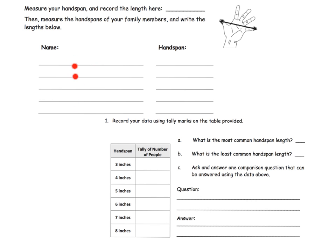So heads up from an equity point of view on this. So here you're going to record the names of your family members and their hand spans, probably in inches.